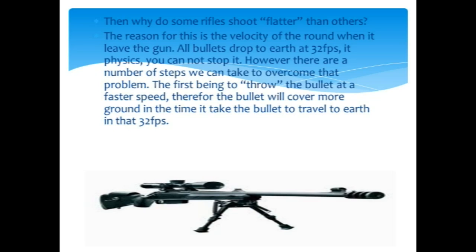When the round leaves the gun, all bullets drop to the earth at 32 feet per second. Physics can't stop it. However, there are a number of steps we can take to overcome that problem. The first one being to throw the bullet at a higher velocity or a faster speed, therefore the bullet will cover more ground in the time it takes that bullet to travel to earth at 32 feet per second. We'll use my demonstration here.